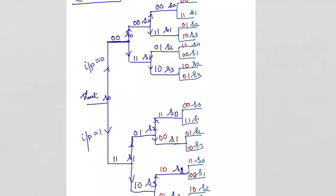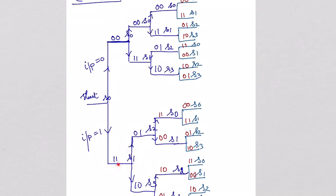For the code tree, you need to use the state diagram. The initial state is always S0. From S0, the upper line corresponds to input 0 and the lower line corresponds to input 1. When you apply 0, it goes to end state S0 with output 00. When you apply 1 at S0, it goes to S1 with output 11.